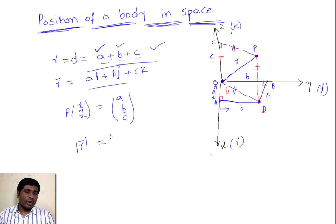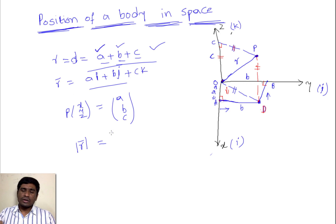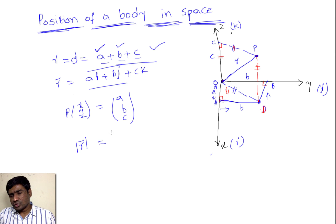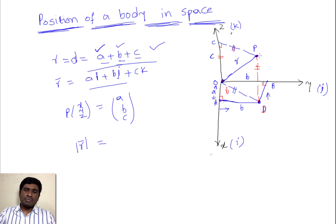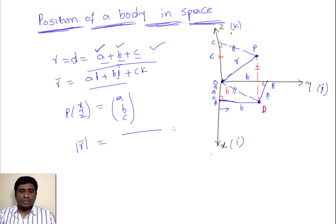The magnitude of r, the distance from O to P, is |r| = √(a² + b² + c²). In 2D, if you have two points (x₁, y₁) and (x₂, y₂), the distance is √((x₁−x₂)² + (y₁−y₂)²). Here, P is at (a, b, c) and O is at (0, 0, 0), so this becomes √((a−0)² + (b−0)² + (c−0)²) = √(a² + b² + c²).